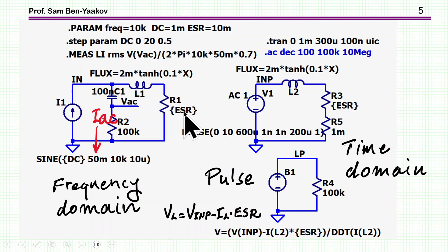Here we have the inductor. This is an ESR, and I'm going to sweep the DC current from 0 to 20 with steps of 0.5. I'm measuring the voltage, which is the voltage across the total inductor, and then calculating the inductance as the voltage times 2 pi 10k, which is the frequency of the excitation, and 50 milliohm is the peak value of the AC component, and then 0.7 because I like to have it in RMS. This is RMS over RMS.